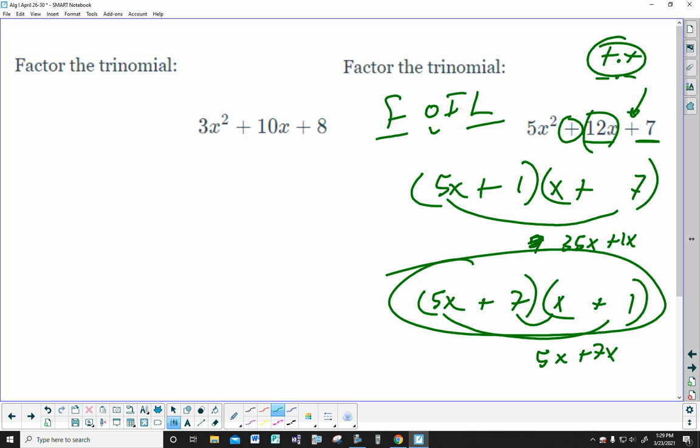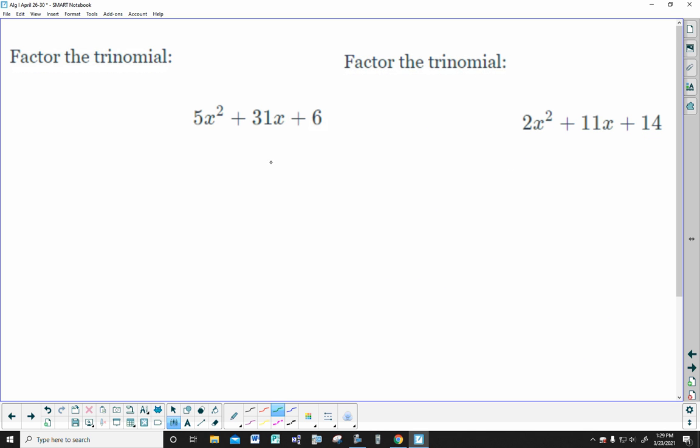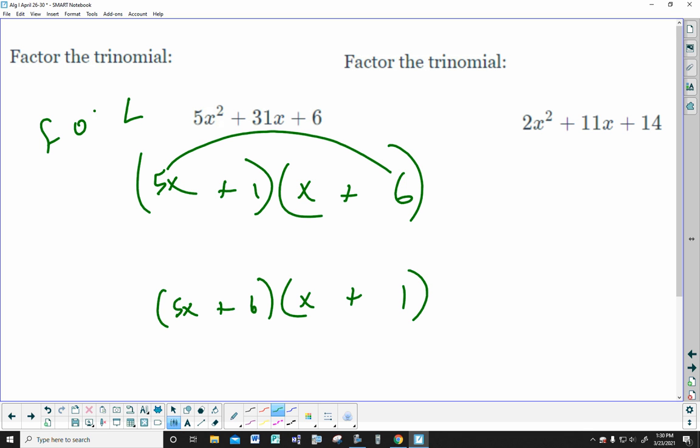Force the front, force the back. Now, it could either be 1, 6 or 6, 1. I'm going to show you that it makes the difference. They're both plus. Don't bother checking the F and don't bother checking the L. You know they're going to work. Outside, it's the O and the I that you're after. 30x. Inside, 1x. There's your 31x. To show you this one doesn't work, there's 5x and 6x, which gives you 11x, which isn't the middle. So, this is the right answer.